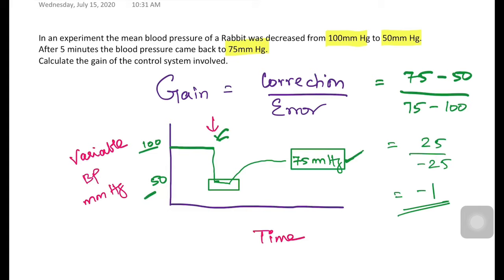Notice that error is in the denominator, so if the error is very low, the gain will be higher. The lower the error, the higher the gain, and the higher the gain, the greater the effectiveness of the system.